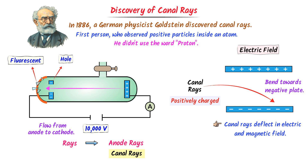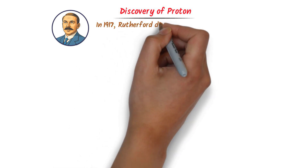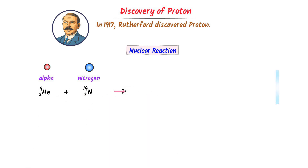This story doesn't end here. Rutherford took this discovery even further and discovered the proton. In 1917, Rutherford took alpha particles and a nitrogen atom. We know that alpha particles are like helium nuclei, which have two protons and two neutrons. The nitrogen atom has seven protons and seven neutrons. He performed a nuclear reaction — he bombarded the nitrogen atom with alpha particles. Rutherford observed that a high-speed particle hit the screen.